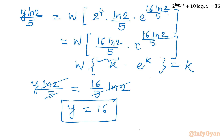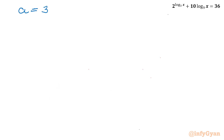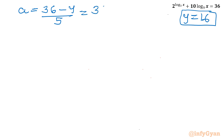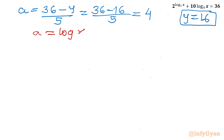Now we substitute back. Our second substitution was a = (36 − y)/5. Plugging in y = 16: a = (36 − 16)/5 = 20/5 = 4. From our first substitution, log x base 3 = a = 4, so x = 3^4. Our final answer is x = 81.